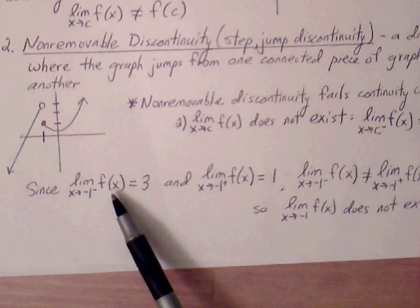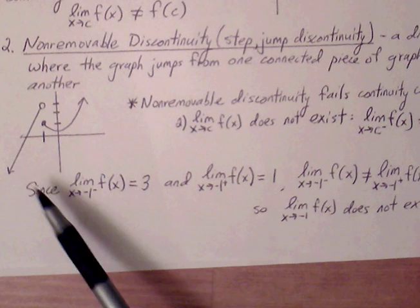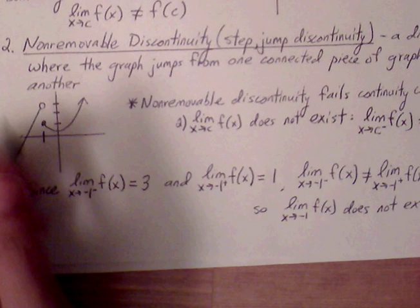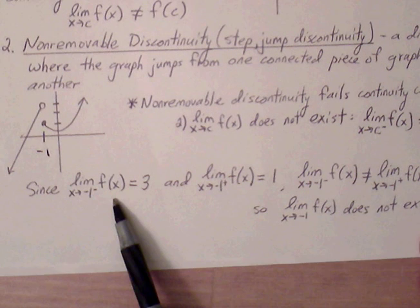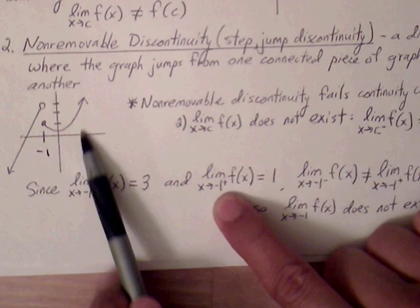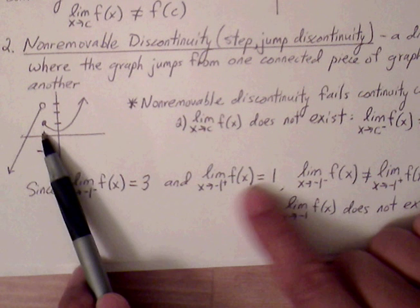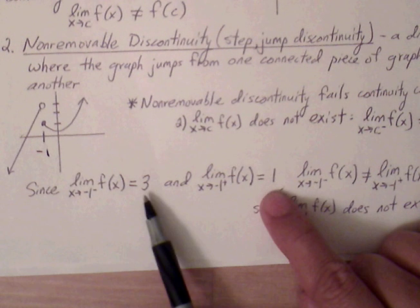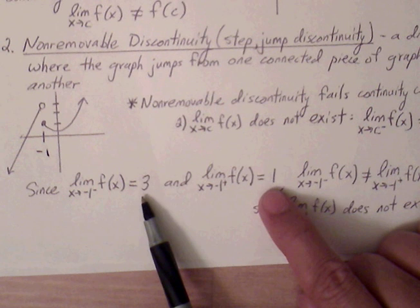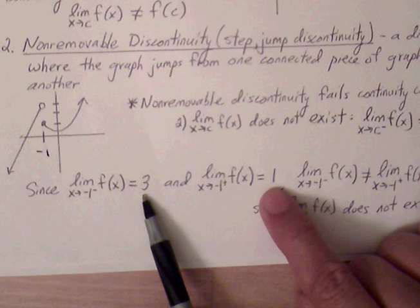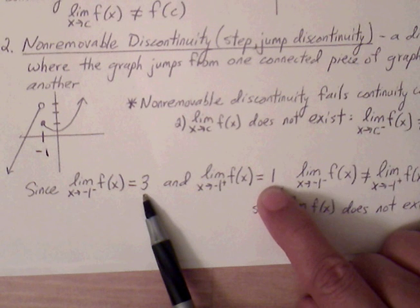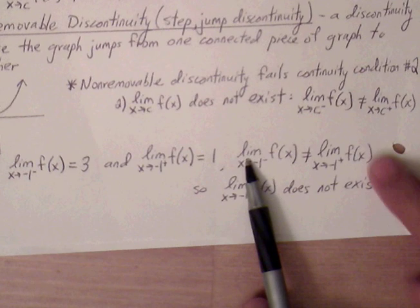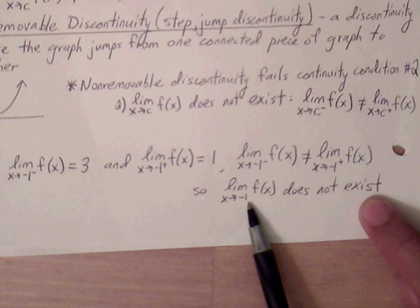For this example, the limit as x approaches negative 1 from the left is 3, and from the right is positive 1. These values are not the same. Since the one-sided limits do not agree, we say the limit as x approaches negative 1 does not exist.